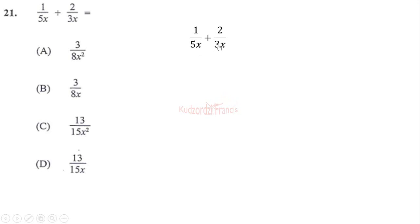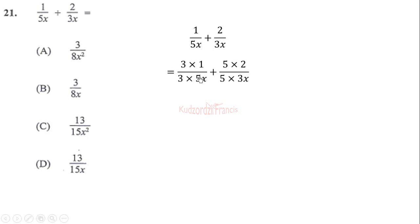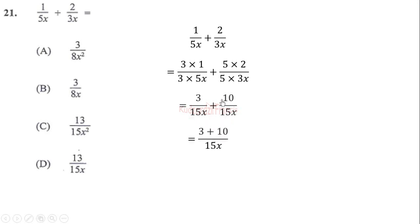We need to multiply 3x by 5 to get 15x, so we multiply the numerator too. That gives us 3 over 15x plus 10 over 15x. Since the denominators are the same, we keep one and add the numerators to get 13 over 15x. The correct answer is option D.